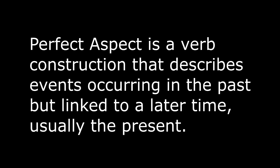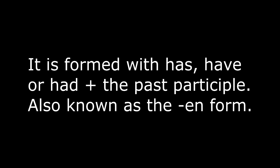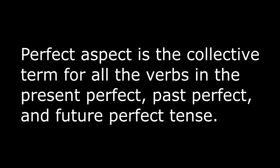Perfect aspect is a verb construction that describes events occurring in the past but relating to a later time, usually the present. It is formed with 'has,' 'have,' or 'had' plus the past participle, also known as the '-en' form. Perfect aspect is the collective term for all the verbs in the present perfect, past perfect, and future perfect tense.